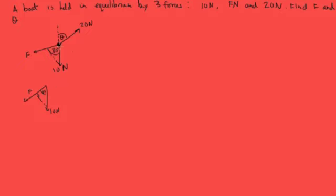We also need to think about the direction parallel to F — we continue F along here. We draw another line and think of the angle perpendicular and parallel to this force. So there's a right angle here, and this makes an angle alpha. Now, theta plus alpha equals 80 degrees, because of the rules of angles.